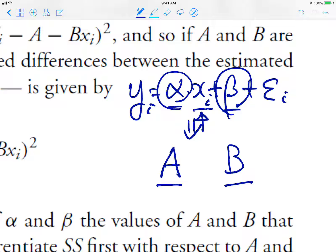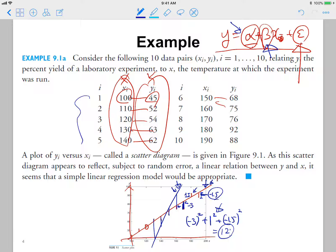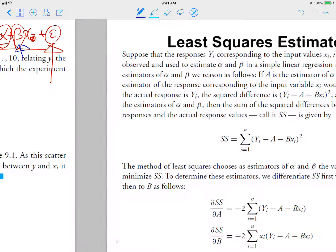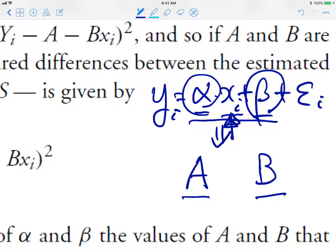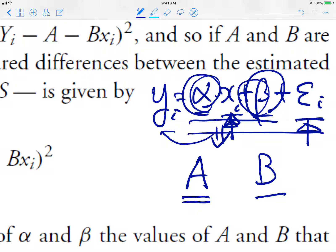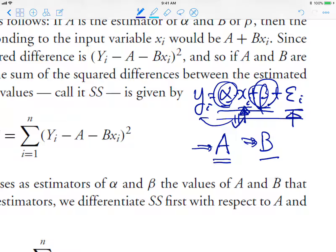The x values are typically given and fixed in our sample. y_i goes through a linear transformation and is added with the random variable e_i, making y_i a random variable. Our estimators A and B are functions of the x_i's and y_i's, so they are also random variables.